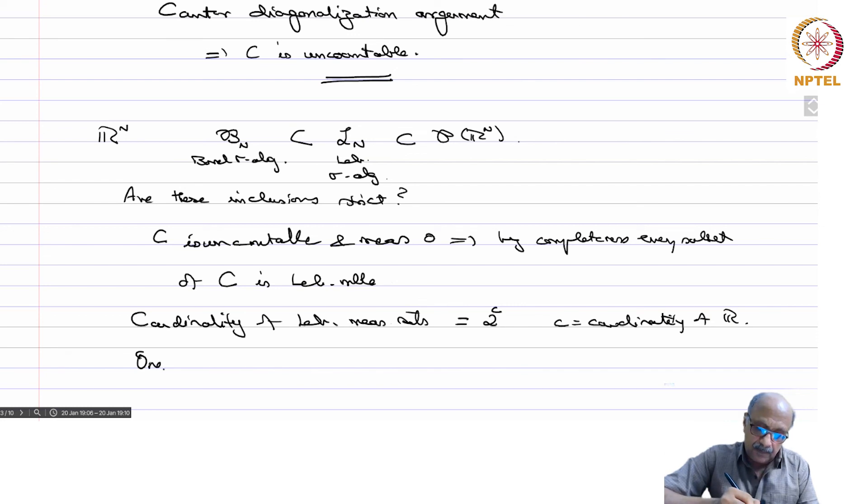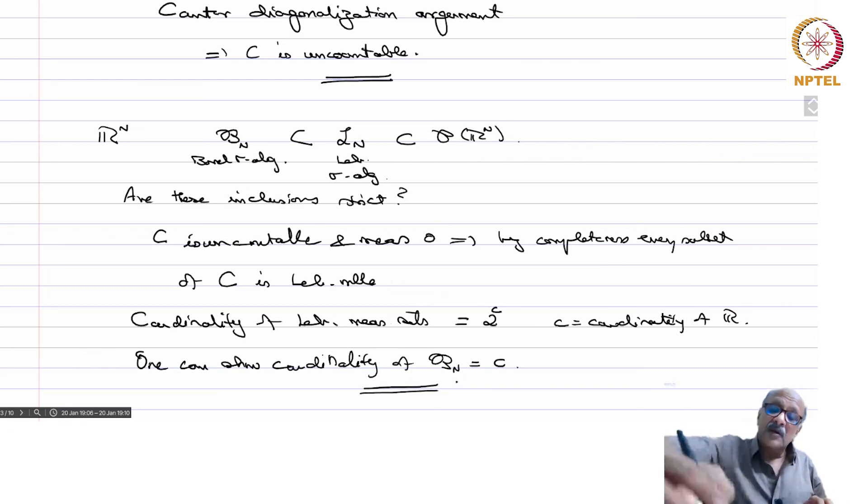One can show cardinality of B^n is nothing but C. So obviously this is much less than that. So there do exist Lebesgue measurable sets which are not Borel measurable. So that comes from the argument of the Cantor set, but we will also later use what is called the Cantor function and produce an explicit example of a Lebesgue measurable set which is not Borel measurable. So we will now continue with the properties of the Lebesgue measure next time.